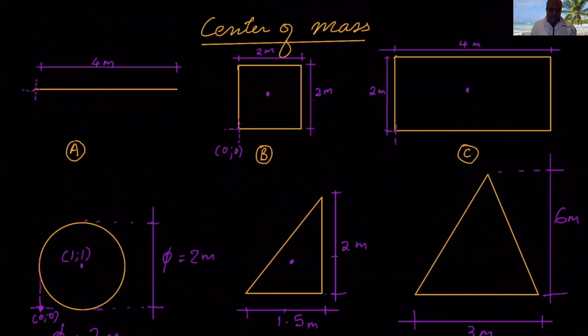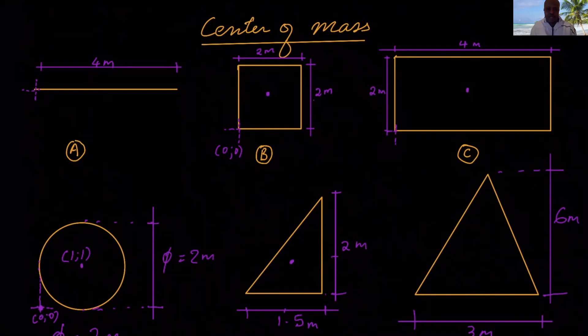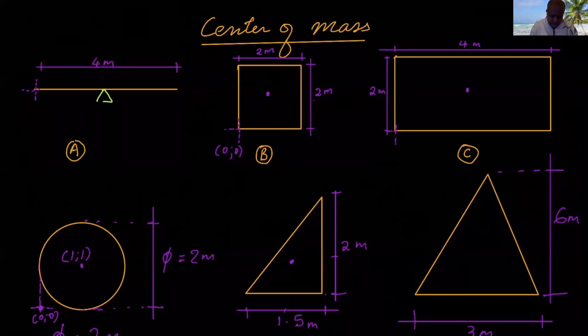The first object is a one-dimensional object. You need to balance this object such that it does not rotate. There must be one point where you can put your stand, your triangular stand, and then the object gets balanced. The stand will be somewhere in the middle, right there.